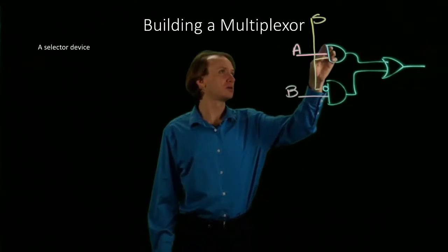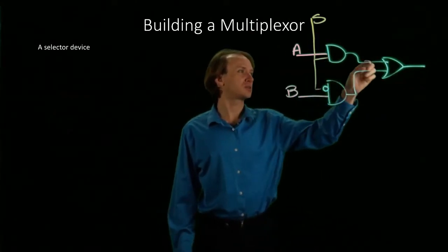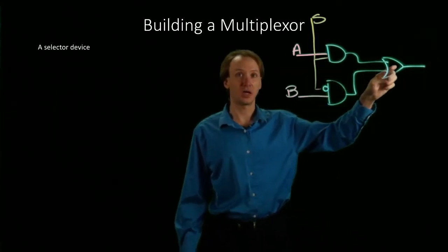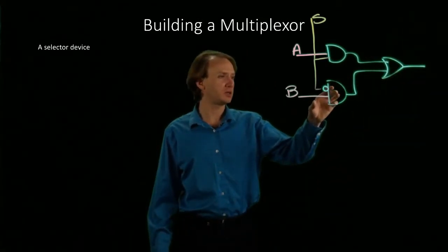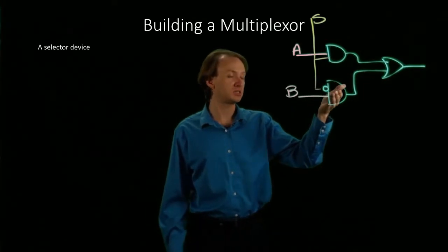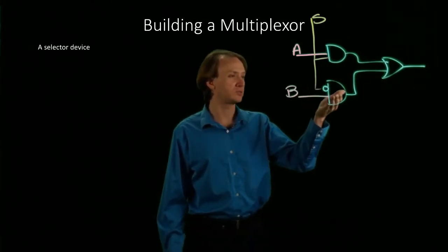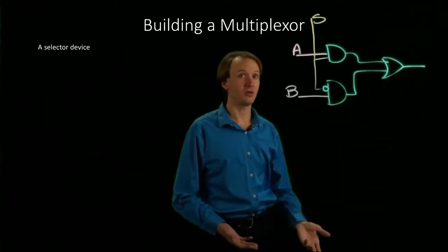Now if we select A, then whatever A is gets passed to this OR gate, and the OR gate will just dutifully pass it along. If we select B, then this AND gate will select to pass the value of B along, and then the OR gate will also dutifully pass that along.